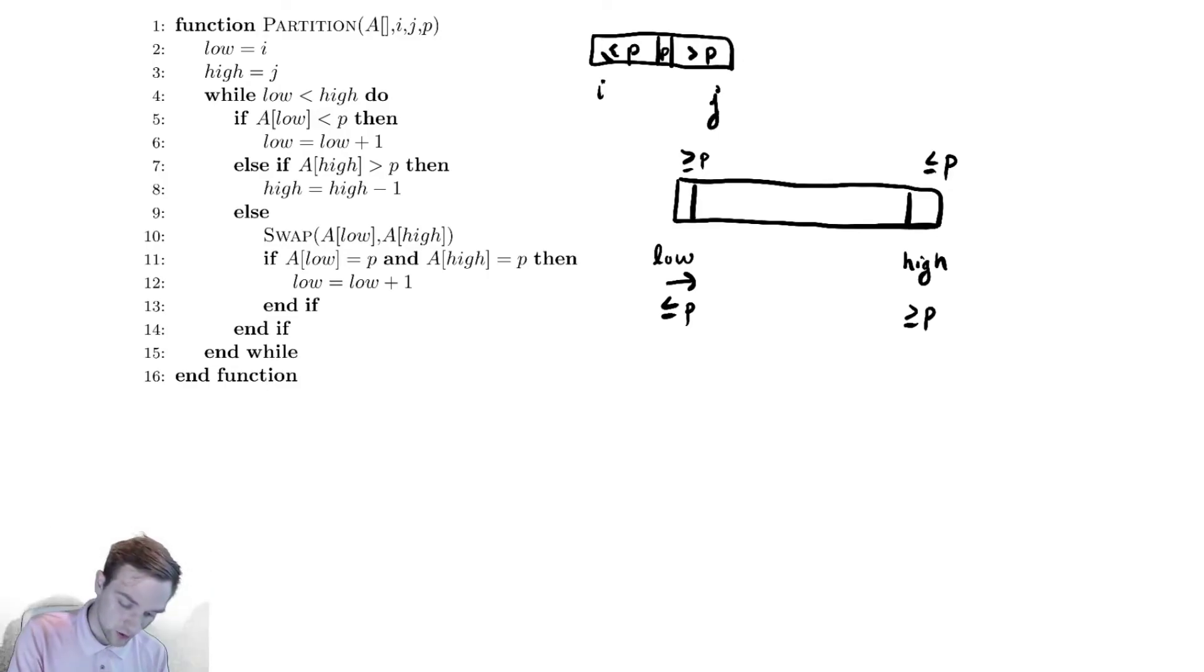For the runtime, we always increment low or high by one. It may take two iterations to increment one of them, but we are always adjusting them by one, and they start at i and j. So this will run in c times (j - i + 1), and that may be 2c or 3c, but it doesn't really matter. We are always incrementing by one or decrementing by one, so this will work. We may call this n in certain cases for the size of the array as well.